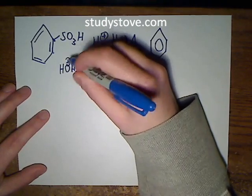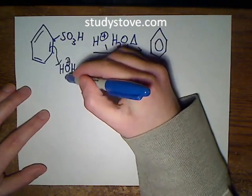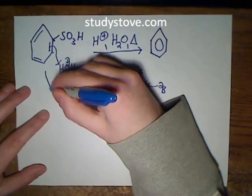So what we're going to have is this pi bond coming in and taking this proton, and that's going to form our carbocation.